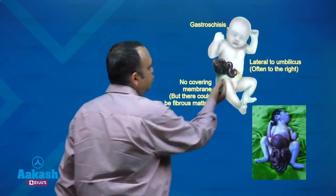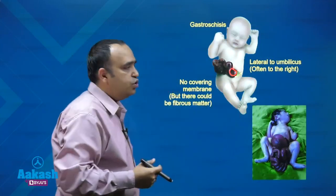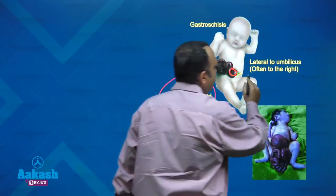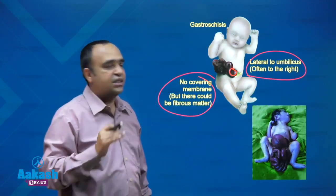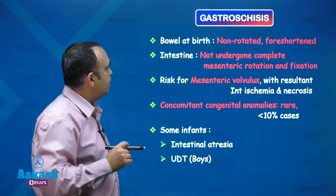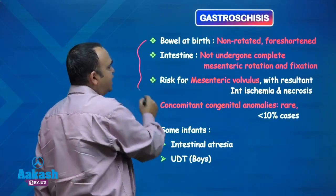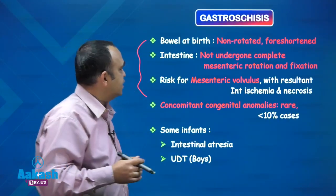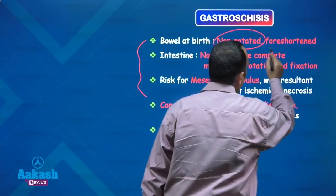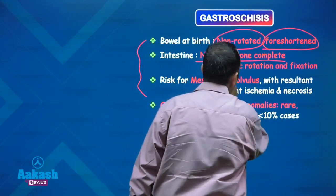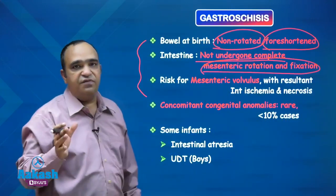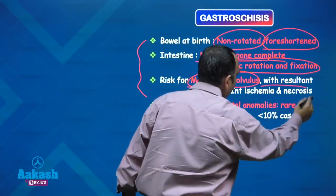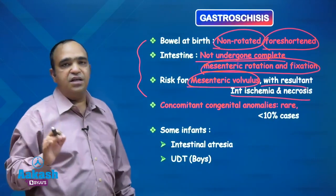That is the classic picture — you can see the defect with the bowel coming out and lying outside, exposed to the environment. The defect is lateral to the umbilicus, mostly on the right side. Because the bowel is lying open and herniated, there are associated bowel changes. The bowel is usually found non-rotated and shortened, having not undergone complete mesenteric rotation and fixation.